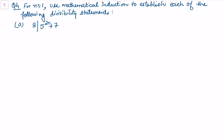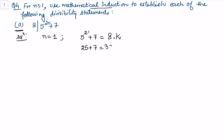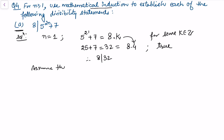In question 4 we prove divisibility statements by mathematical induction. Part a: show 8 divides 5^(2n) + 7. Base case n=1: 5² + 7 = 25 + 7 = 32 = 8×4, so 8 divides 32 and the result holds for n=1.